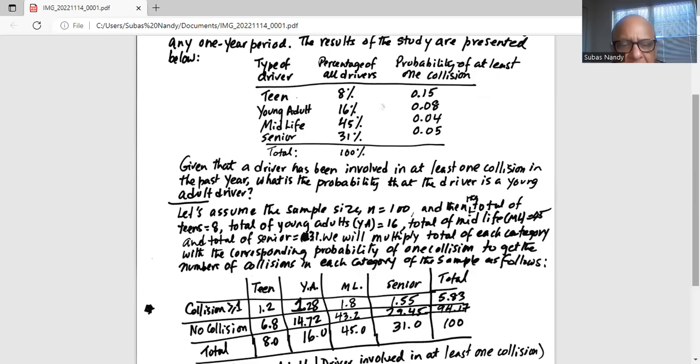So collision greater or equal to 1 means at least one collision. So for teen, it will be 8 multiplied by 0.15, which is 1.2. For young adults, it will be 16 multiplied by 0.08 and so forth.